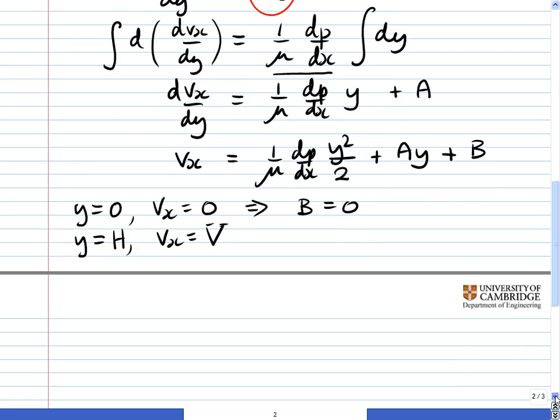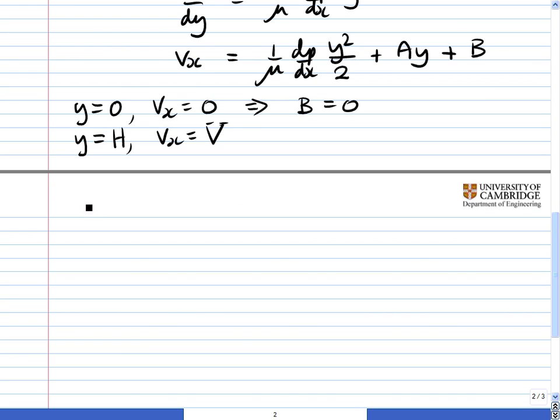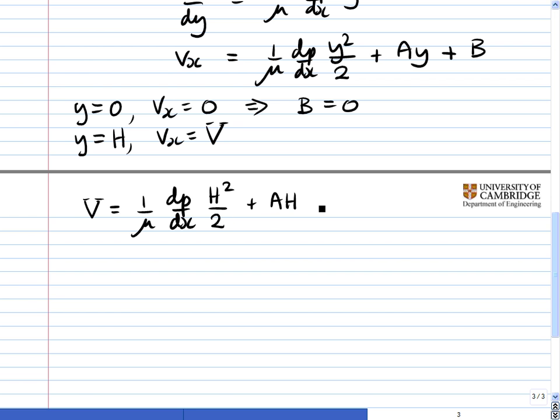So substituting in, we're going to get big V = (1/μ)(dp/dx)(h²/2) + Ah + B, but we know that B equals 0. Now we need to solve for A, so we'll take this term in the middle over to the left-hand side. We'll get V - (1/μ)(dp/dx)(h²/2) = Ah. Take the h onto the other side and now we've got an expression for A.